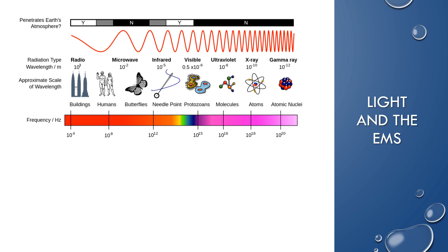Here is a graphic relating the different types of electromagnetic radiation in the electromagnetic spectrum to their waves. Radio waves have the longest wavelength, followed by microwaves, infrared, visible, ultraviolet, X-rays, and gamma rays — going from longest to shortest wavelength. Because of the inverse relationship, radio waves have the lowest frequency and gamma rays have the highest frequency.